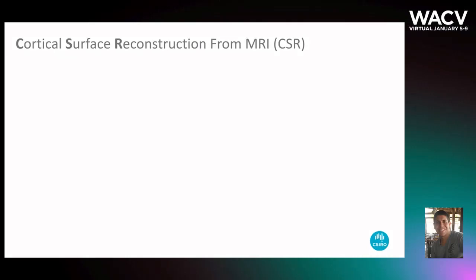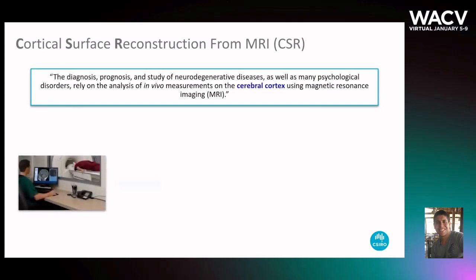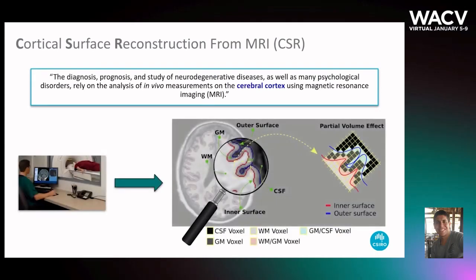Cortical surface reconstruction is a well-known task in medical imaging and it plays a central role in the study of neurodegenerative diseases like Alzheimer's and Parkinson's. The goal is to estimate triangular meshes for the inner and outer cortical surfaces that define the brain cortex from MRI images.